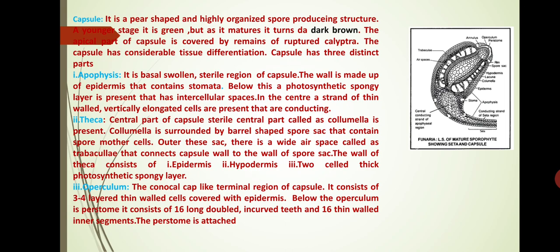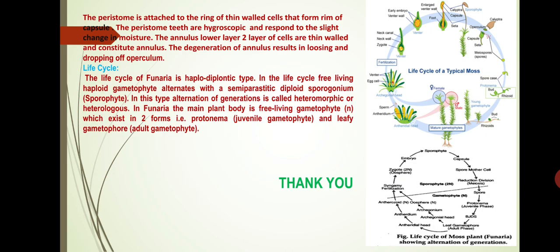Next we discuss about the operculum. The conical cap-like terminal region of the capsule consists of three to four-layered thin-walled cells covered with epidermis. Below the operculum is the peristome. It consists of sixteen long double-incurved teeth and sixteen thin-walled inner segments. The peristome is attached to a ring of thin-walled cells that form the rim of the capsule. The peristome teeth are hygroscopic and respond to slight changes in moisture. The annulus — the lower two layers of cells — is thin-walled; degeneration of the annulus results in the loosening and dropping of the operculum.